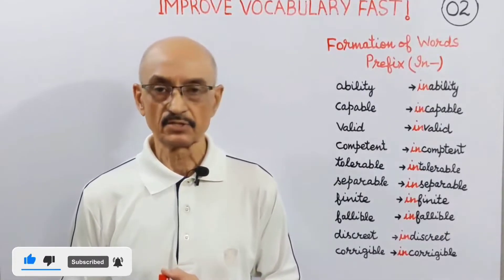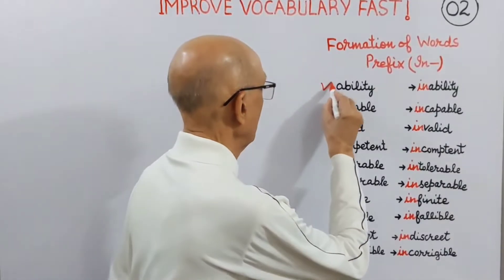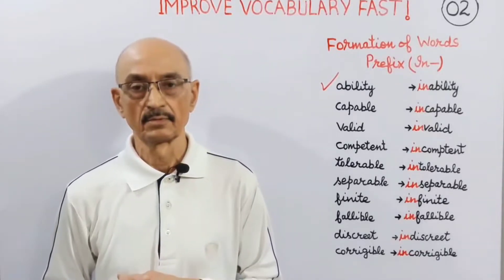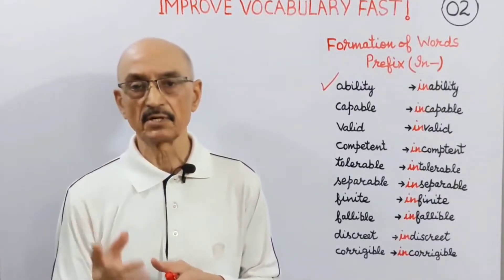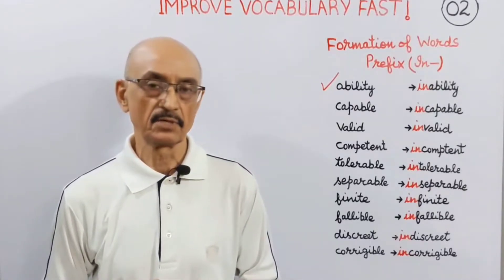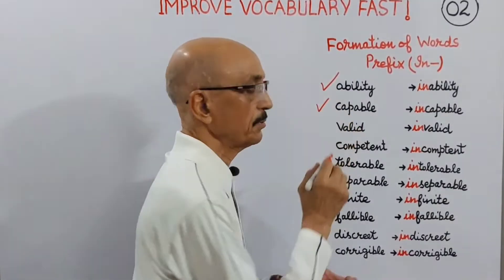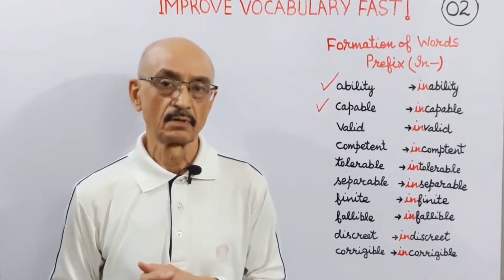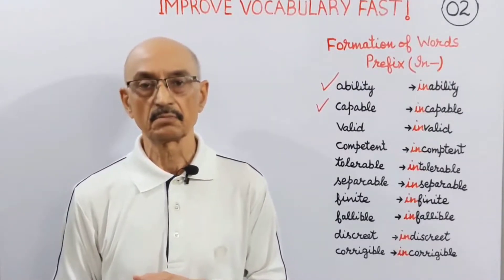The first word is 'ability', this is a noun. If you fix prefix 'in', it changes into 'inability' — it has become the antonym of 'ability'. The next word is 'capable', this is an adjective. When you add prefix 'in', it changes into its antonym 'incapable'.